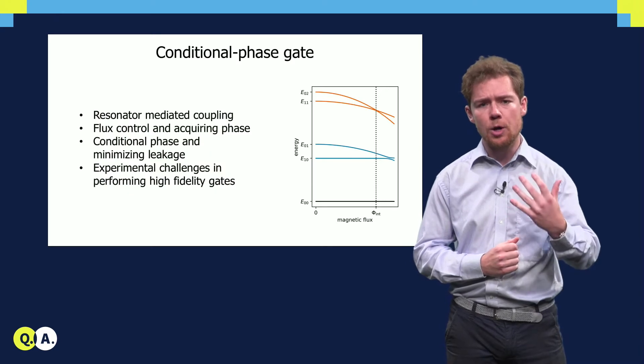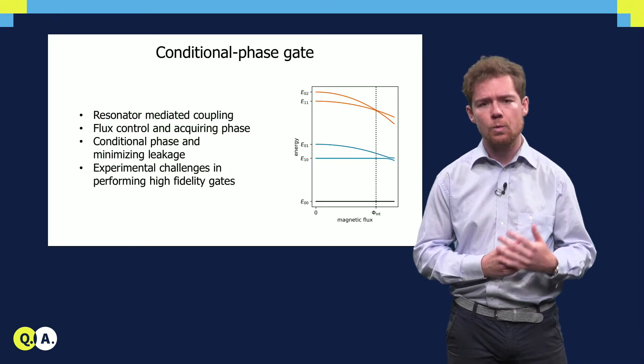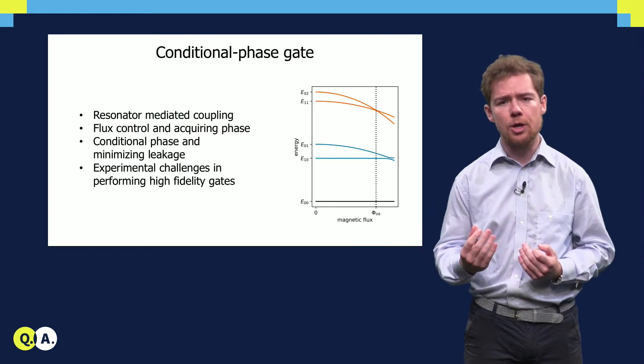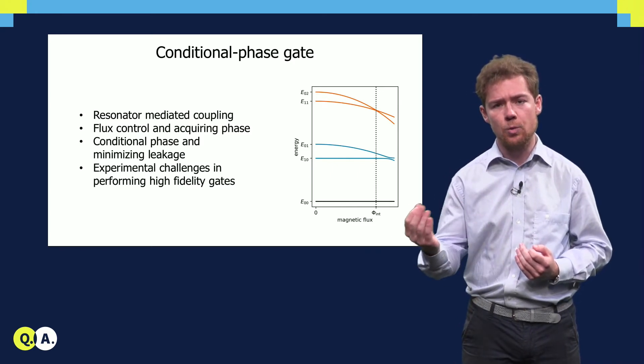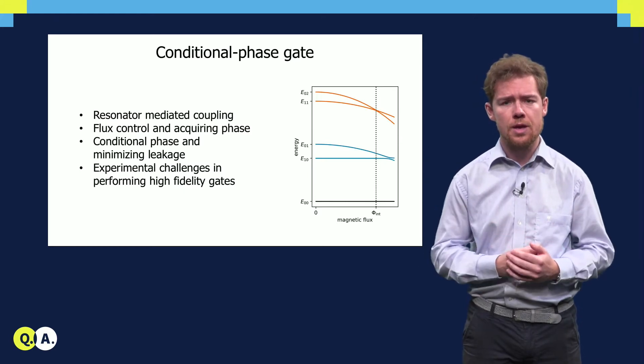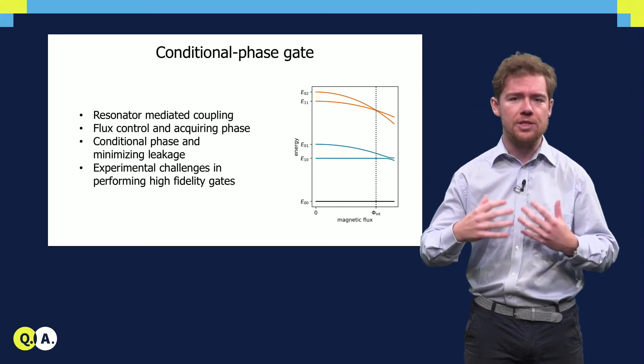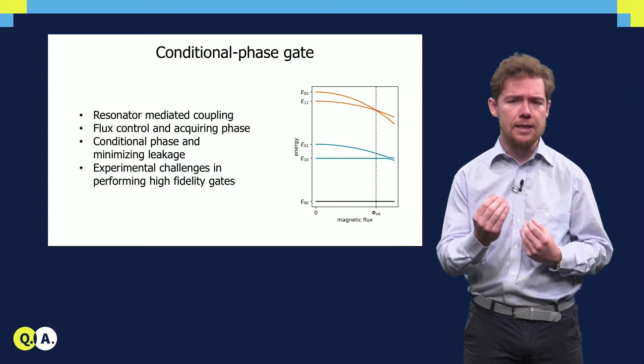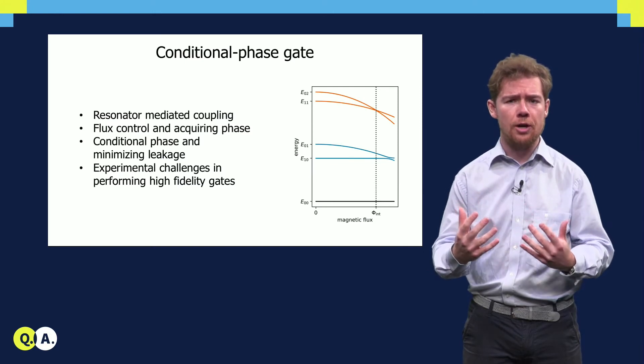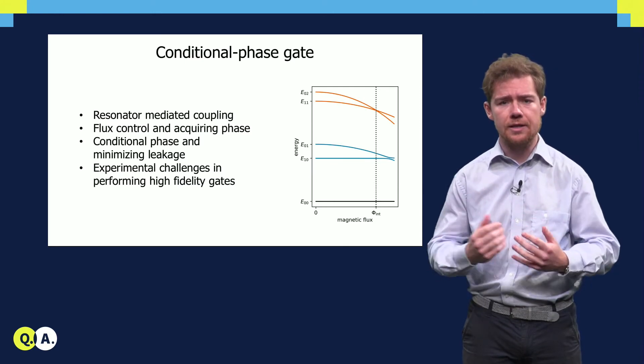To understand how to perform such a c-phase gate, we will look at what mediates the interaction, how qubits can be tuned in and out of resonance with an interaction, and why this causes the qubits to accumulate phase. How to use this interaction to perform a c-phase gate while minimizing leakage out of the computational subspace. And finally, what the experimental challenges are when implementing high fidelity gates.